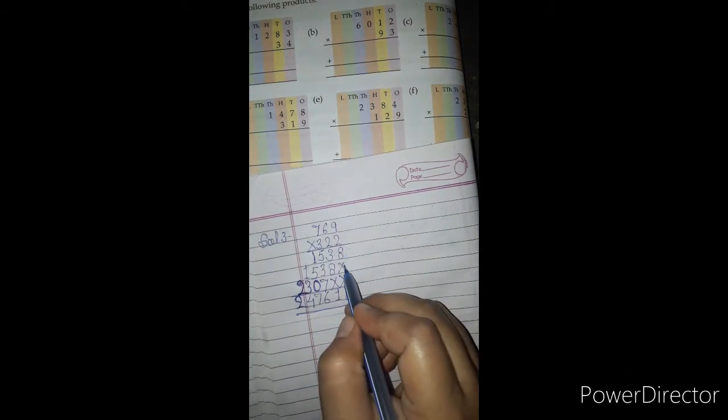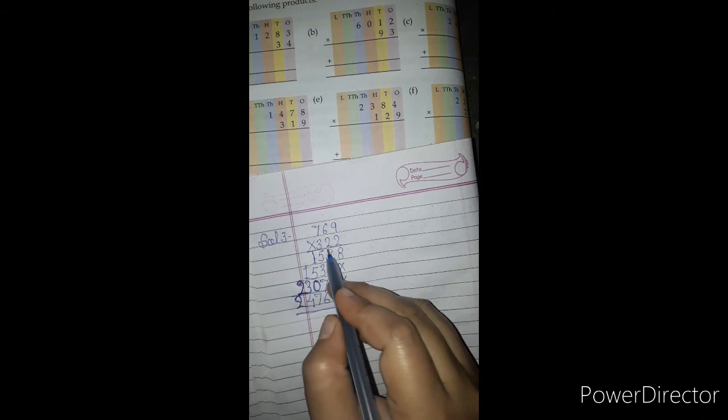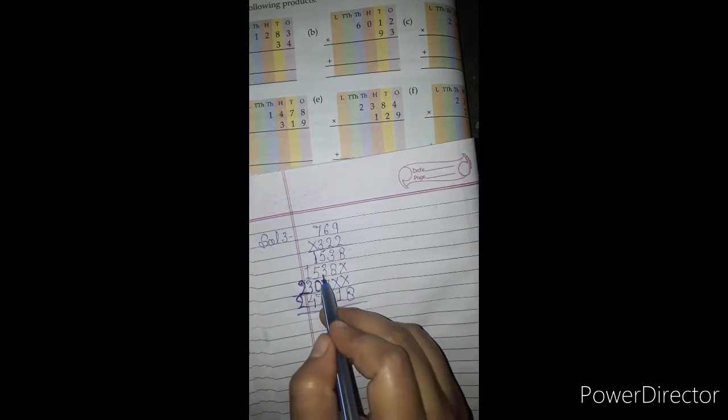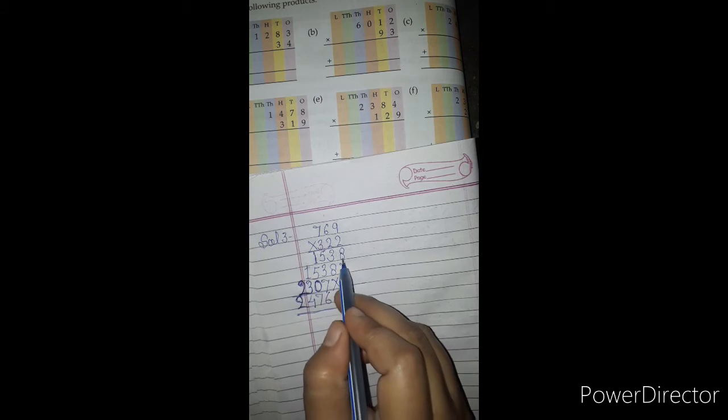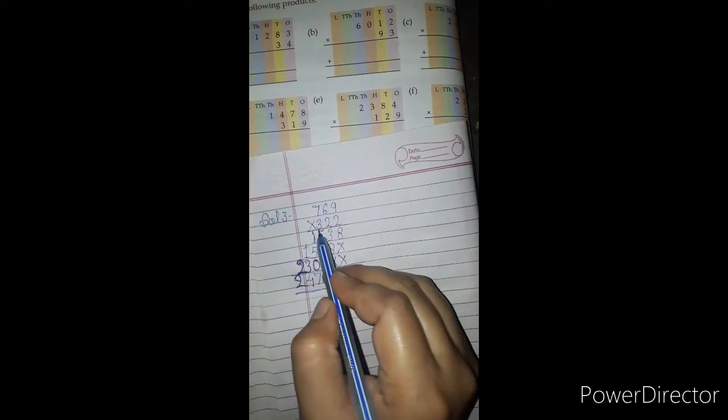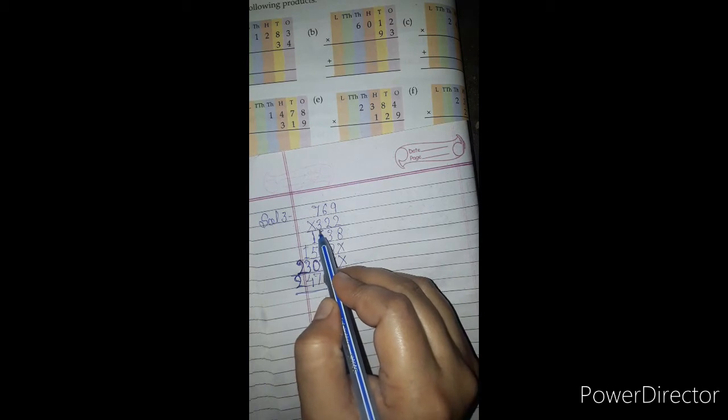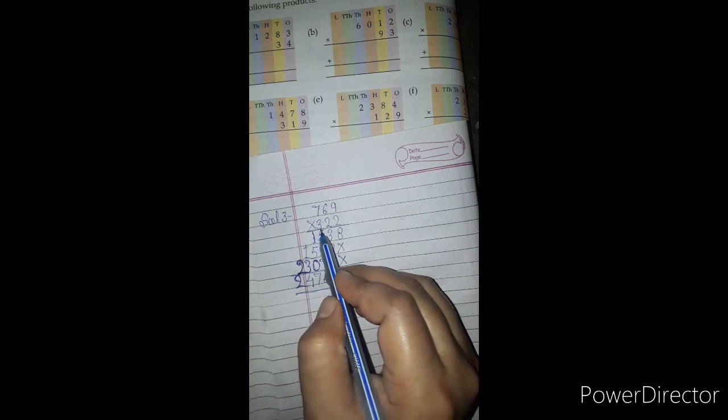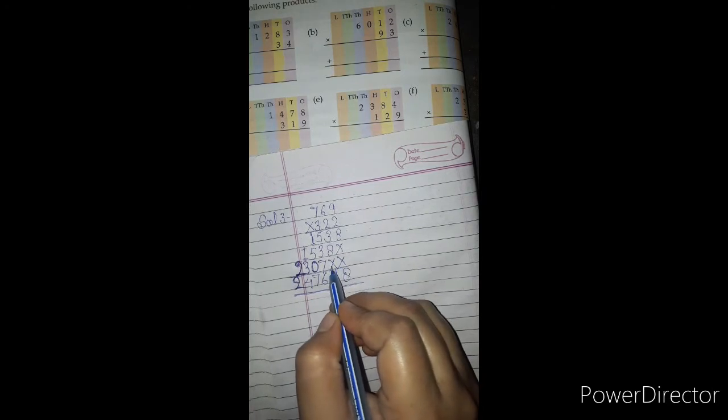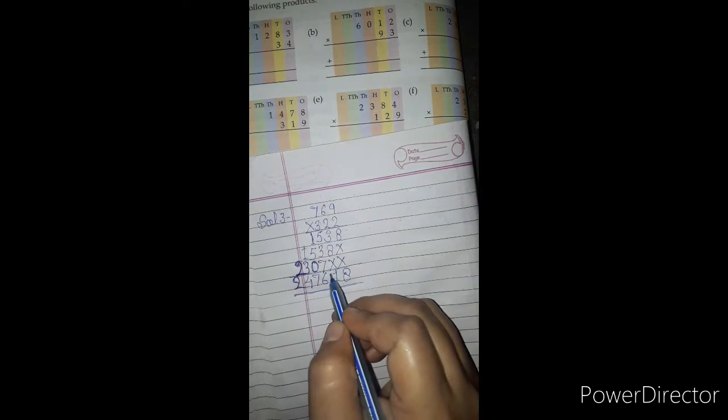We put the cross sign again, and multiply by 2, so the same digits come: 8, 3, 5, 1, but skipping one number. Now we start multiplying from the third digit.